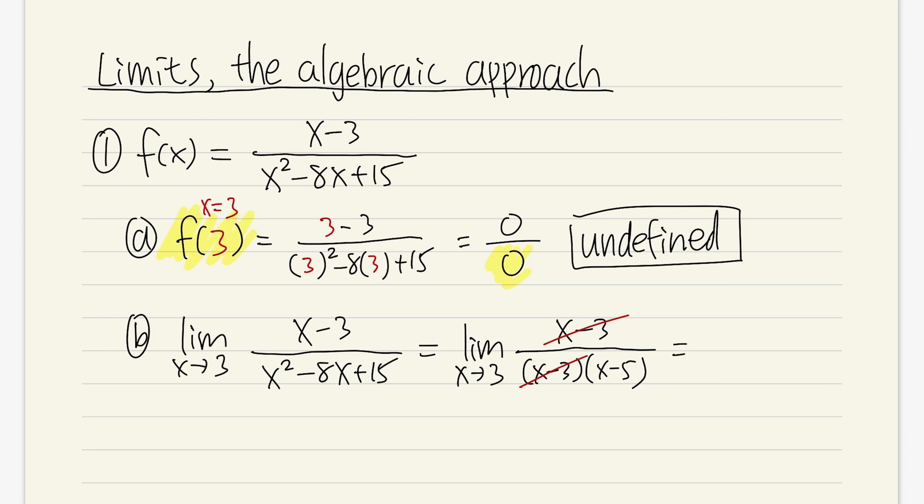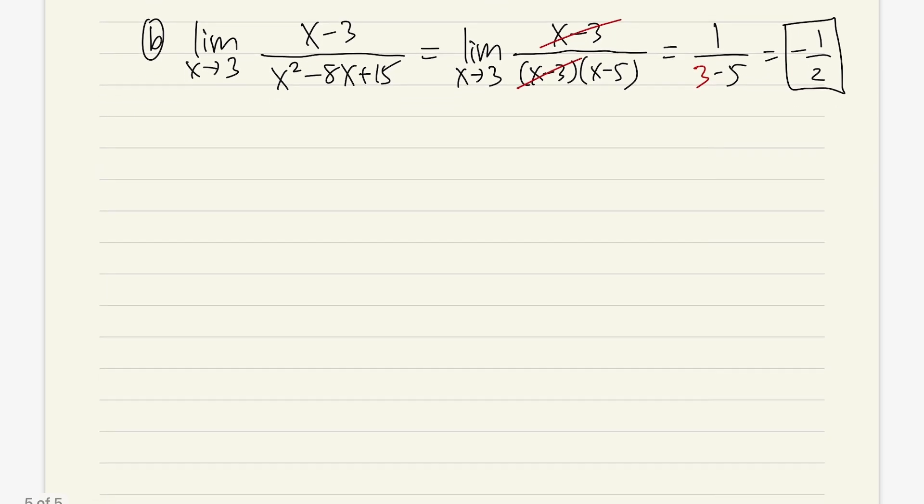And we will get 1 over 3 minus 5. And the answer is simply negative 1 half. And then we are done. So now let me explain what's going on right here. And then the best way for me to do so is to utilize graphs. So let's first take a look at what if we want to graph 1 over x minus 5.